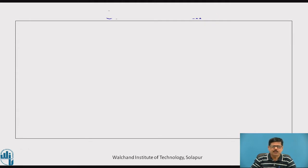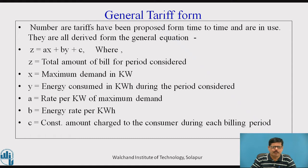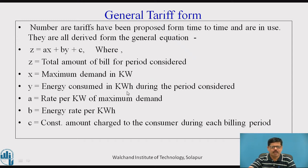Various types of tariffs have been proposed from time to time; however, they are derived from the general equation: Z = AX + BY + C, where Z is the total amount of bill for the period considered (monthly or annual). X is maximum demand in kilowatt, Y is energy consumed in kilowatt-hour during the period, A is the rate per kilowatt of maximum demand, B is the energy rate per kilowatt-hour (per unit), and C is the constant amount charged to the consumer during each billing period.